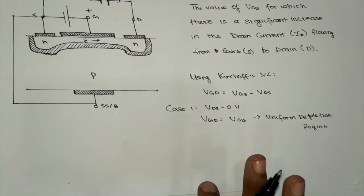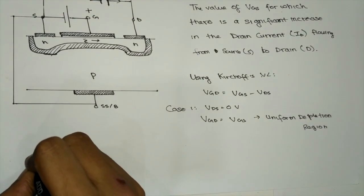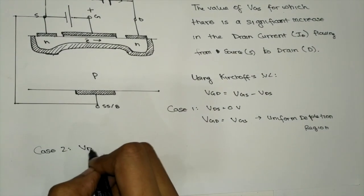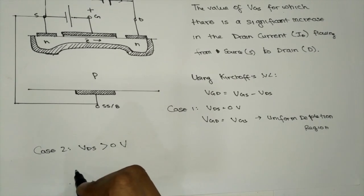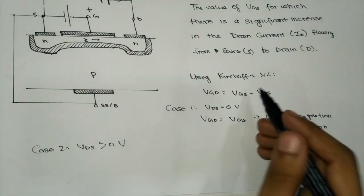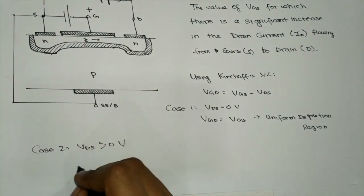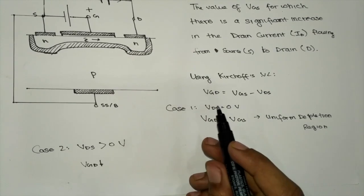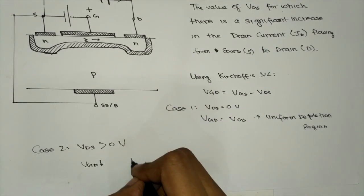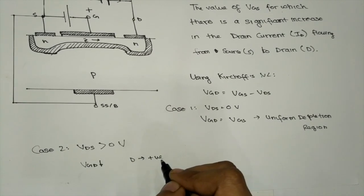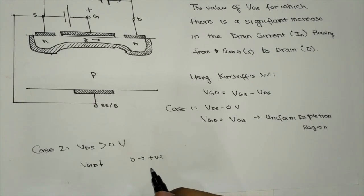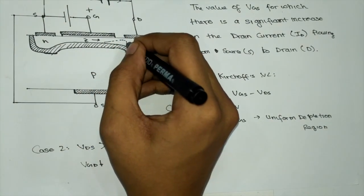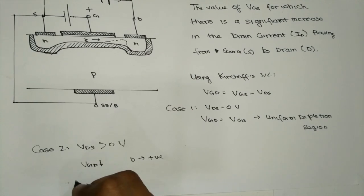Case 2: VDS is greater than 0 V. When VDS > 0 V, the value of VGD falls since it is subtracted from VGS. VGD tends to become more positive in nature. Due to this positive potential at the drain terminal, the depletion region at the drain terminal increases.